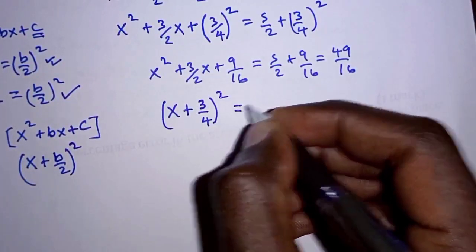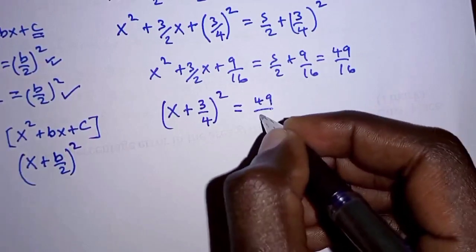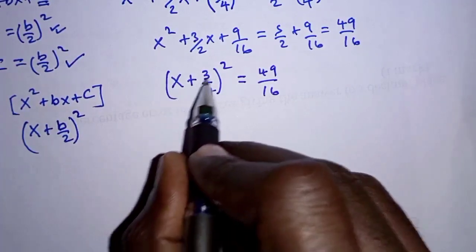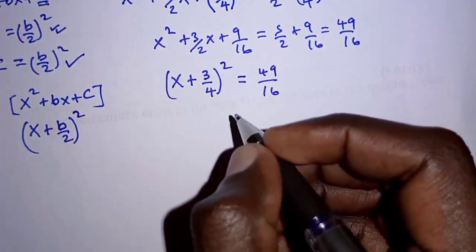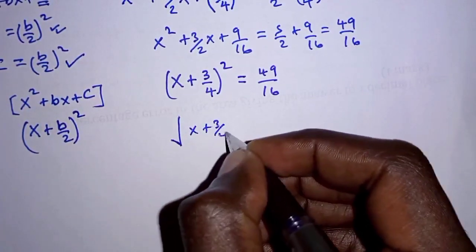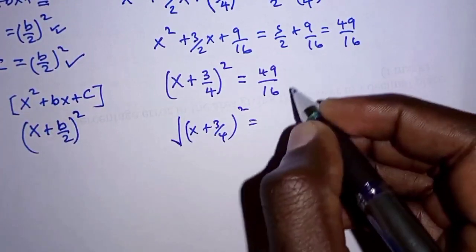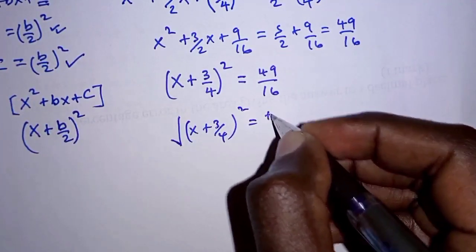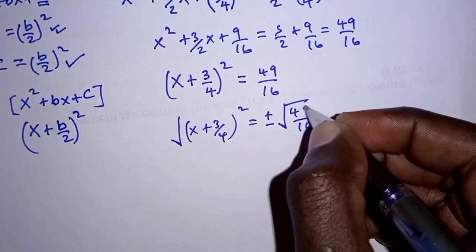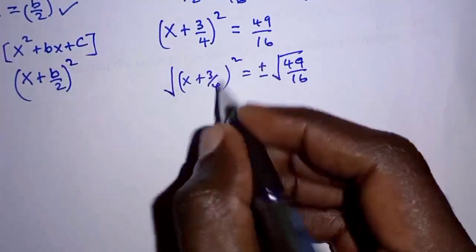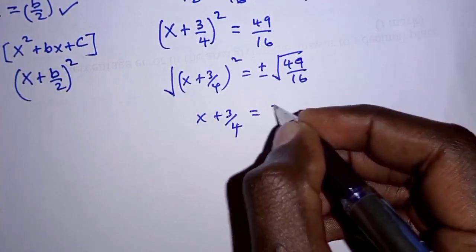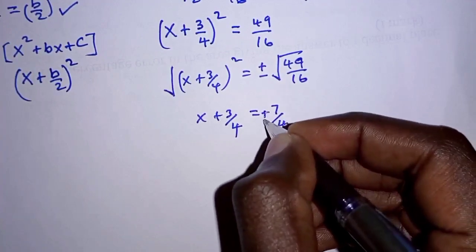So on the left hand side we have x plus 3 over 4 squared, and on the right hand side we have 49 over 16. To find the value of x, we take the square root of both sides. The square root of x plus 3 over 4 squared gives x plus 3 over 4, and the right hand side becomes plus or minus the square root of 49 over 16, which is plus or minus 7 over 4.